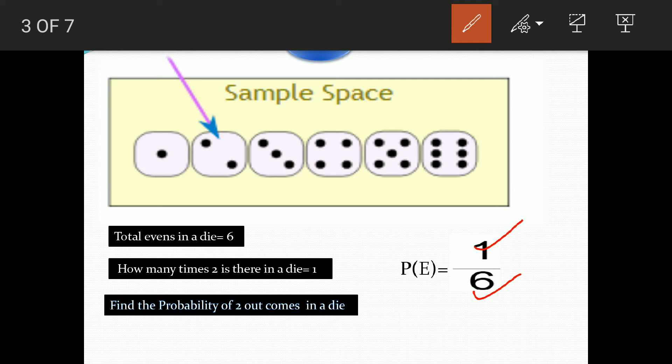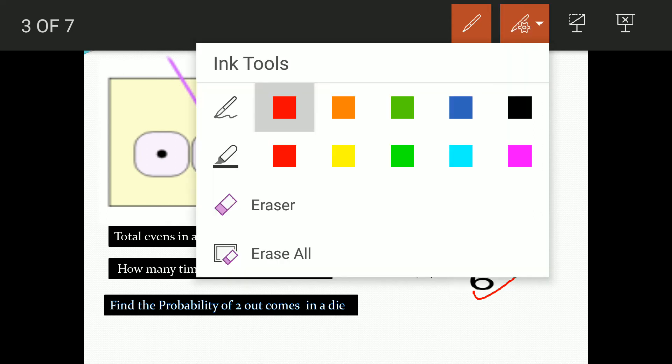It means that if you throw the dice 6 times, 1 time you will get at least 2. Now next slide, we will go.